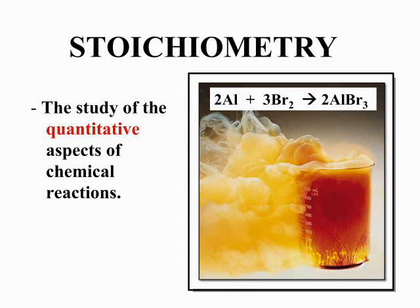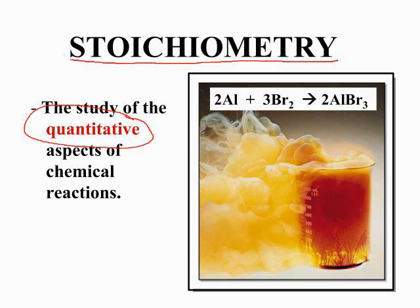We're now going to start chapter 9, and the topic of chapter 9 is the math of chemistry, or stoichiometry. The math of chemistry involves the quantitative relationships between chemical reactants and products. You have previously learned to balance chemical equations, and using these chemical equations, you will now apply the math of stoichiometry to solve for reactants and products in the chemical reaction.